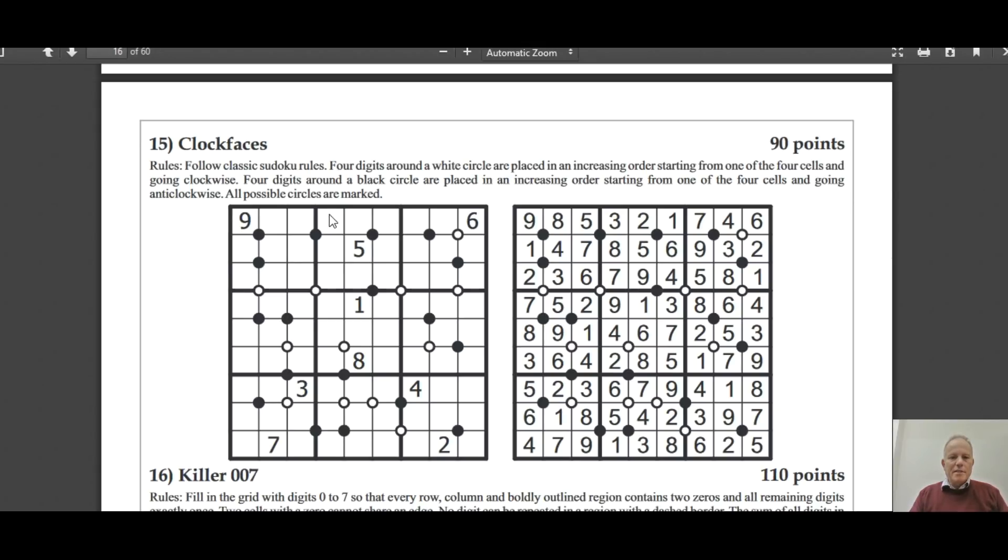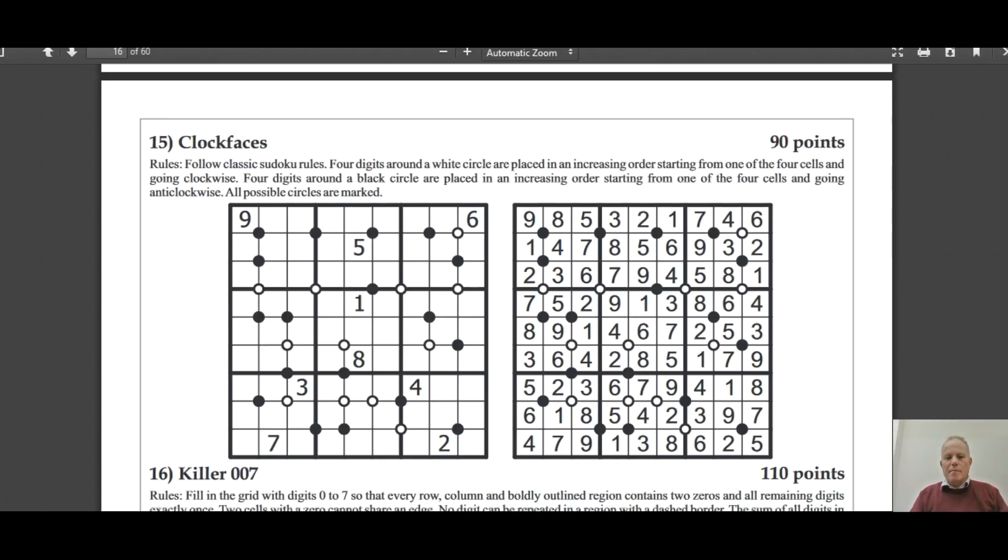Another weird one here - Clock Faces, although I have seen this before. Four digits around a black circle are in an increasing order going anti-clockwise, and around a white circle they're in increasing order going clockwise. So if you look at the solution, this white circle here has two, three, four, six going clockwise. Well, fair enough, but extremely hard to work that out. All possible circles are marked, so that's one of the negative constraints. And you don't know which cell then the sequence will start in, where the lowest number will be.